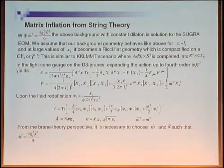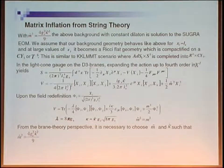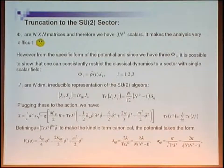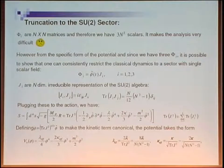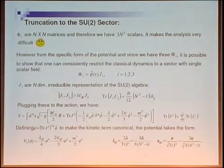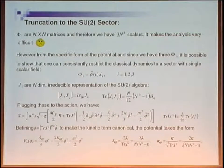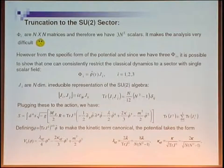Expanding the DBI action up to fourth order in X_i, the potential for X_i takes this form. After a rescaling, the potential looks like a specific form where lambda and kappa are defined in terms of the string coupling and the strength of the RR 6-form. It is difficult to handle the problem generally, but the dynamics simplifies when three scalar fields are proportional to the generators of the SU(2) algebra. Using the SU(2) algebra relations, the potential and action are cast into a simplified form, and making the kinetic term canonical rescales the quartic and cubic couplings by factors of N^3 and N^{3/2} respectively.